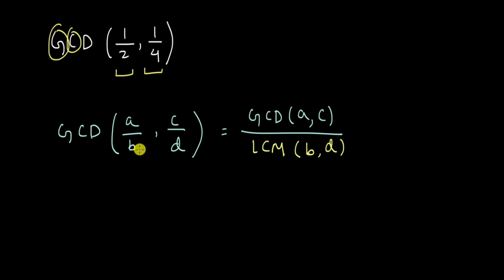So the greatest common divisors of these two fractions will be the greatest common divisor of the numerators divided by the least common multiple of the denominators. I won't prove this for you but what I can do is I can verify it for these numbers. In the last video, we showed that this should be equal to 1 by 4.